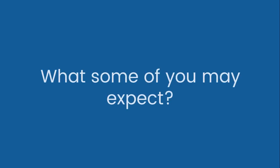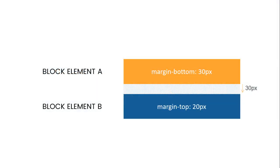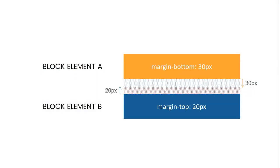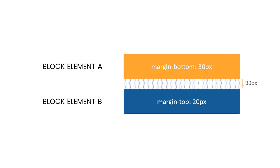It's going to be 30 pixels. Some of you might expect the margin-bottom to be 30 pixels to the bottom and 20 pixels to the top. But in reality we are just going to get margin-bottom 30 pixels, because it is the greater among these two values. So we are going to get a 30-pixel margin-bottom.